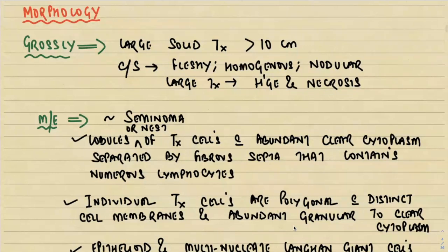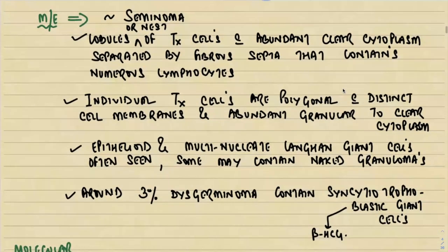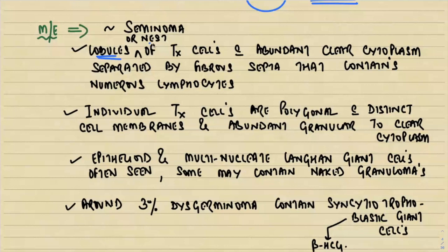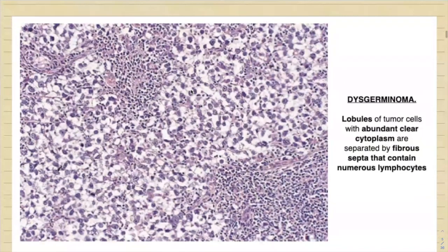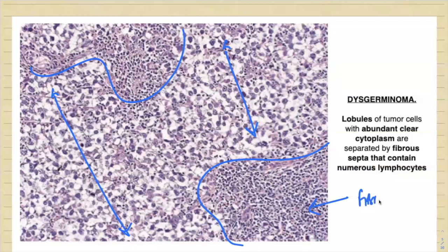Grossly, dysgerminomas are large solid tumors more than 10 centimeters in diameter — fleshy, homogenous, nodular, with areas of hemorrhage and necrosis. Microscopically, similar to seminoma, you find lobules or nests of tumor cells with abundant clear cytoplasm separated by fibrous septa containing numerous lymphocytes. Can you appreciate these nests of polygonal clear cells with abundant clear cytoplasm, separated by fibrous septa containing numerous lymphocytes?